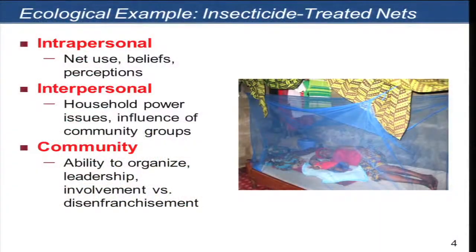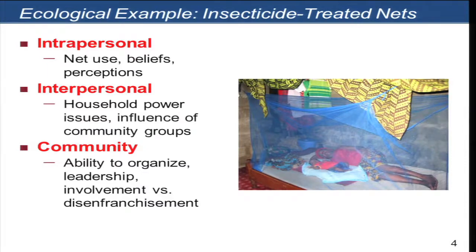How is this influenced at the interpersonal level, at the household power structure? Just because nets are there doesn't mean that vulnerable people like children under five or pregnant women are actually using them. We want to look at the community and the social networks to see how these can influence the distribution and use of nets. Can the community take responsibility for net distribution and monitoring? Are there disenfranchised segments? What is their history of involvement?